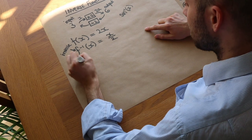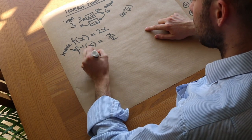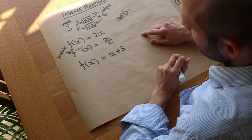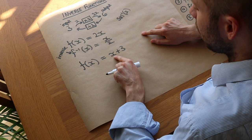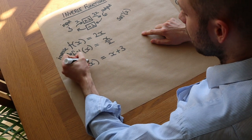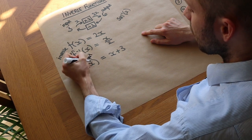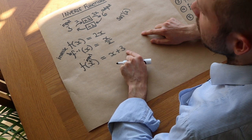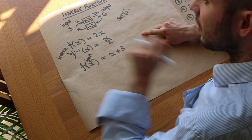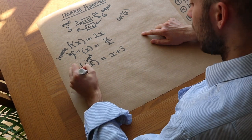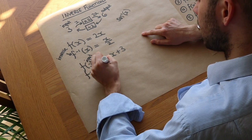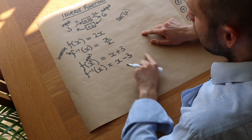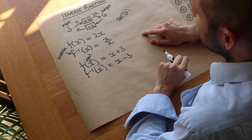Let's take another example. Say f(x) = x + 3. This function takes an input x and adds 3 to it. So the opposite would be a function that subtracts 3 from the input. Therefore the inverse function would be f⁻¹(x) = x − 3. Some of these functions we can find the inverse just by inspection.